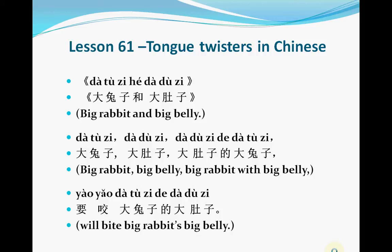So today we are going to have fun. We are going to have two tongue twisters in Chinese. Let's see the first one. The first one is about the pronunciation tù and dù, because some people don't know how to pronounce tù and dù well. So this tongue twister will help you practice pronouncing tù and dù. Let's try this one first.